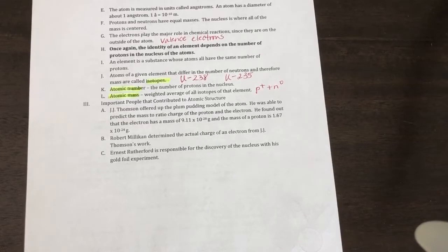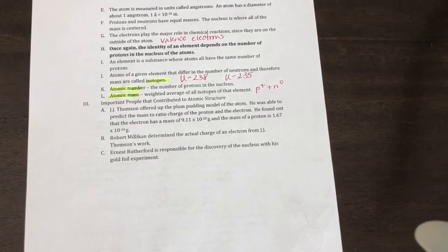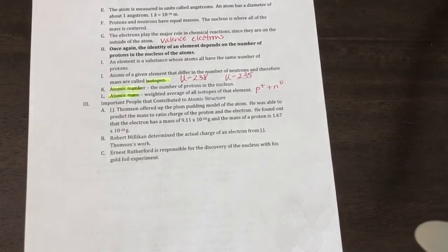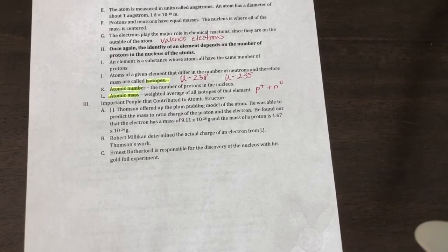These are people that contributed to atomic structure. JJ Thompson offered up the plum pudding model of the atom. He was able to predict the mass to ratio charge of proton and electron. He found that the electron has a mass of 9.11 times 10 to the negative 28 grams and the mass of the proton is 1.67 times 10 to the negative 24 grams. So it's like 10,000 times more massive.